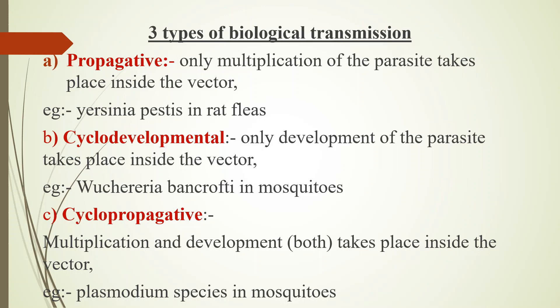To recap, propagative example is Yersinia pestis in rat flea in the case of plague. Cyclo-developmental example is Wuchereria bancrofti in mosquitoes. Cyclo-propagative example is Plasmodium species in mosquitoes.